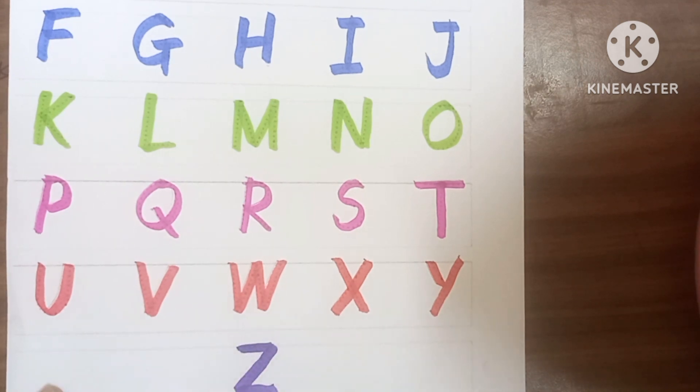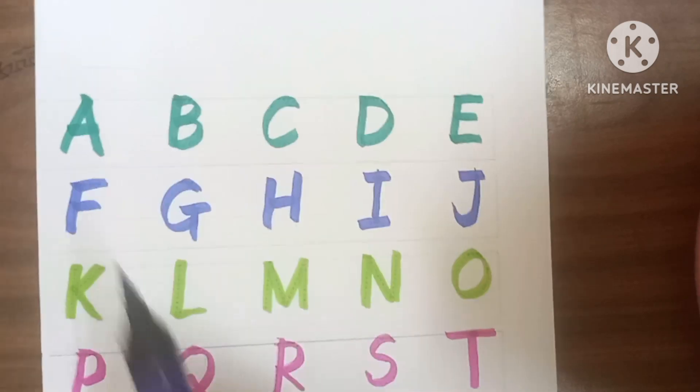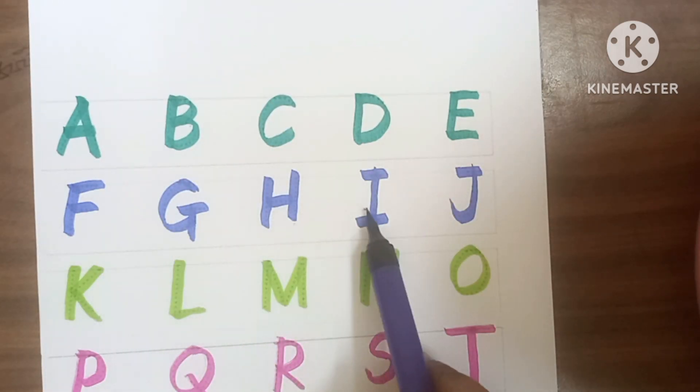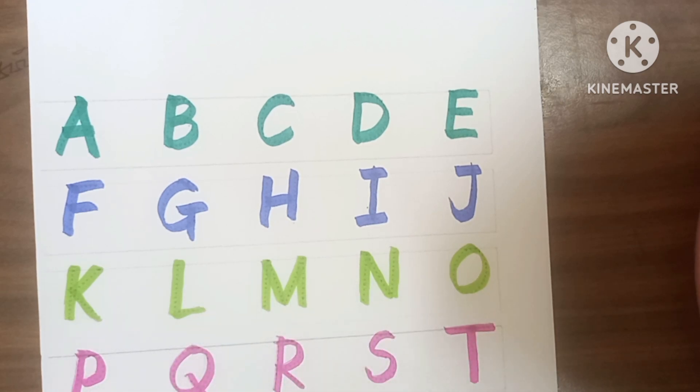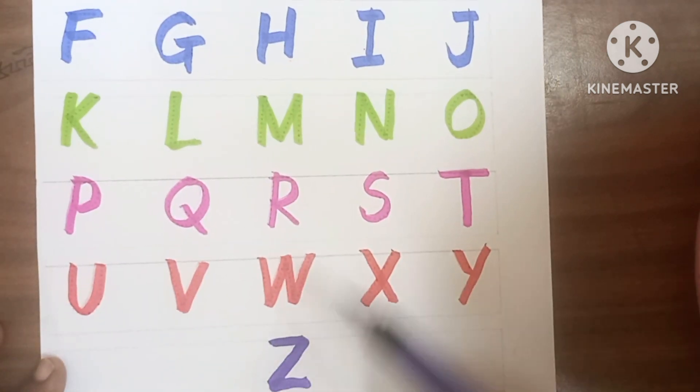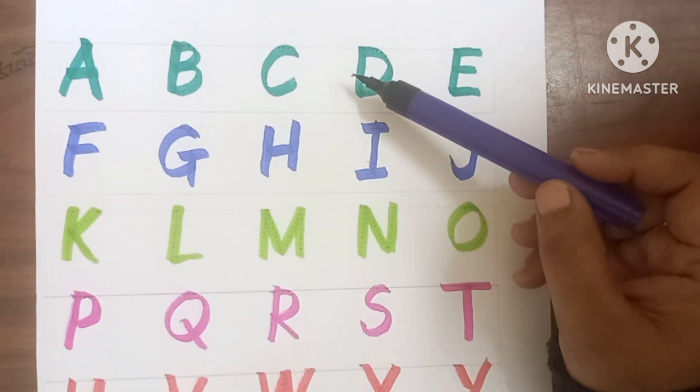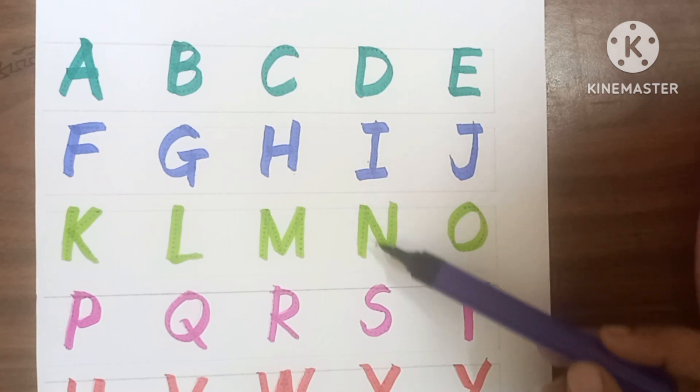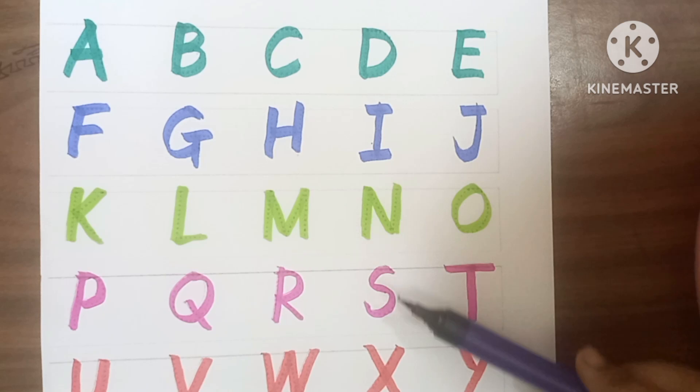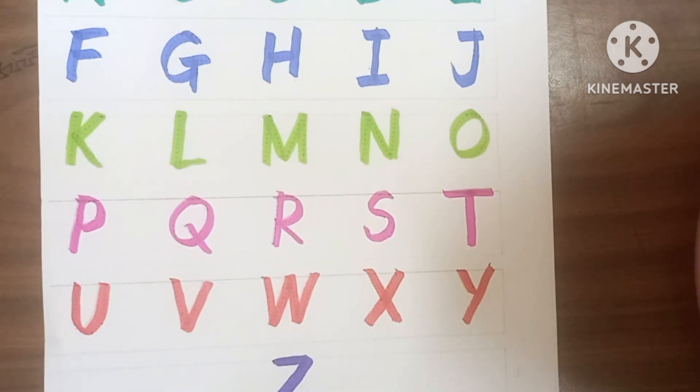Z Z for zoo. A B C D E F G H I J K L M N O P Q R S T U V W X Y Z. The dark green color, blue color, light green color, pink color, red color, and blue color.